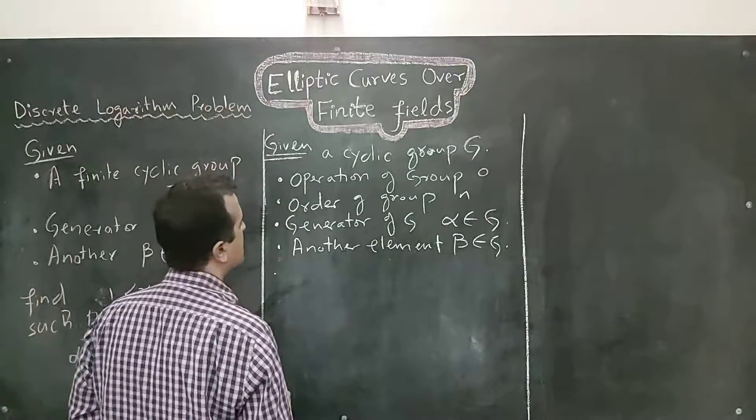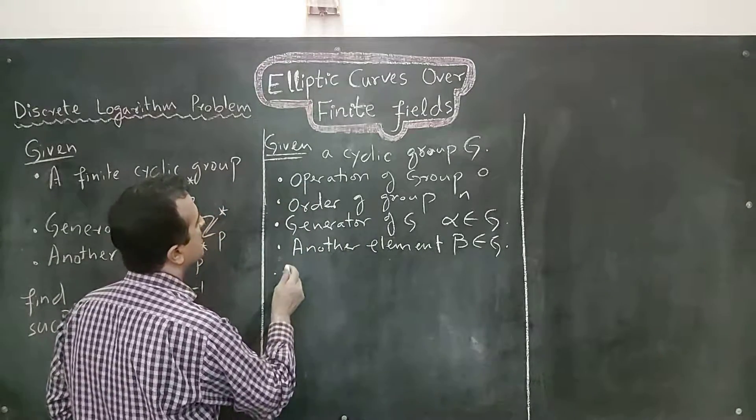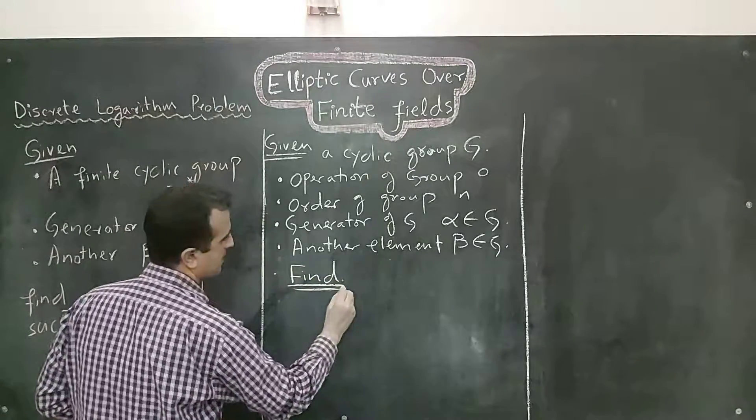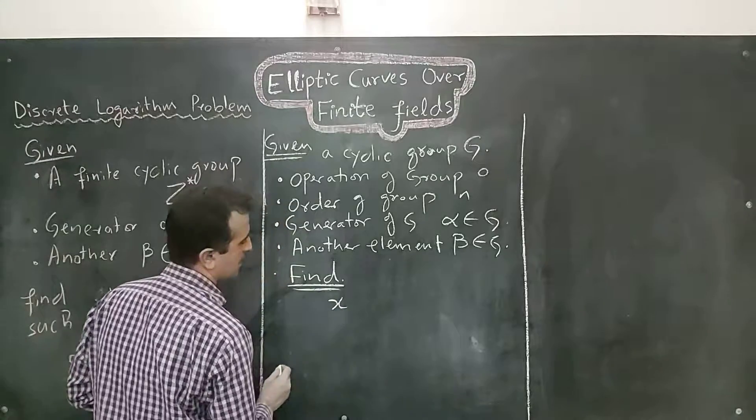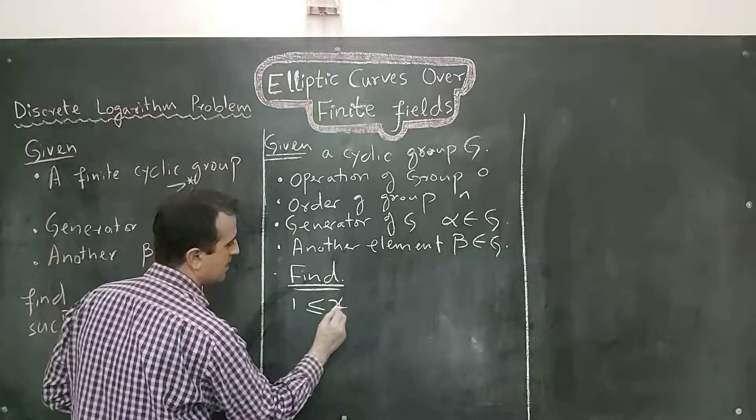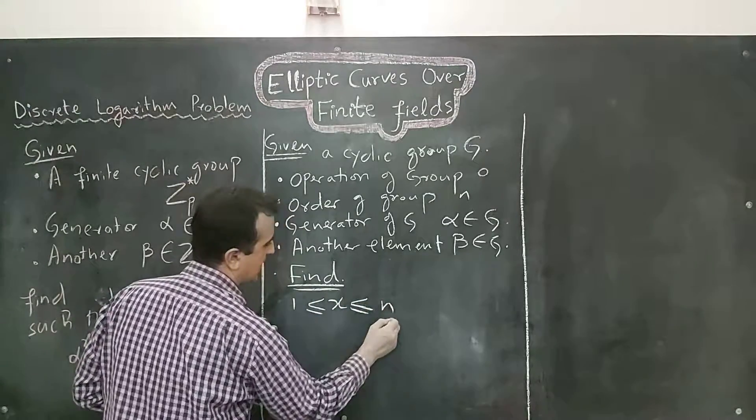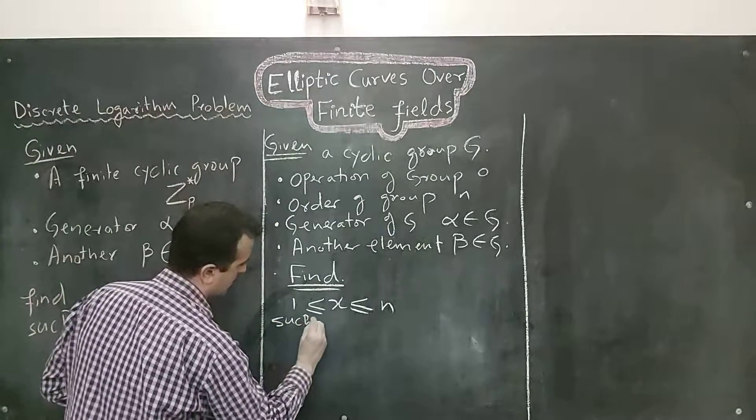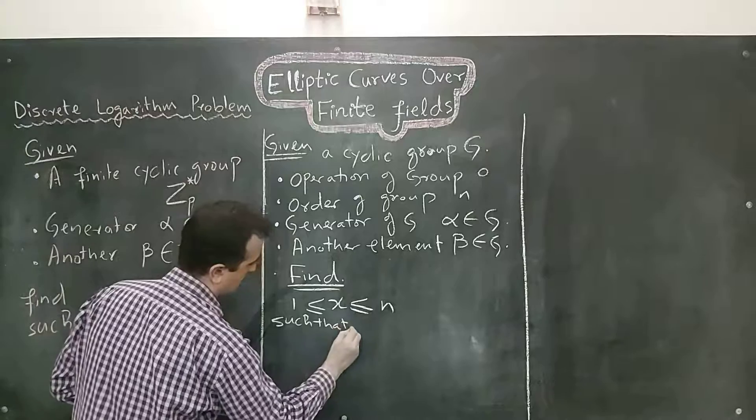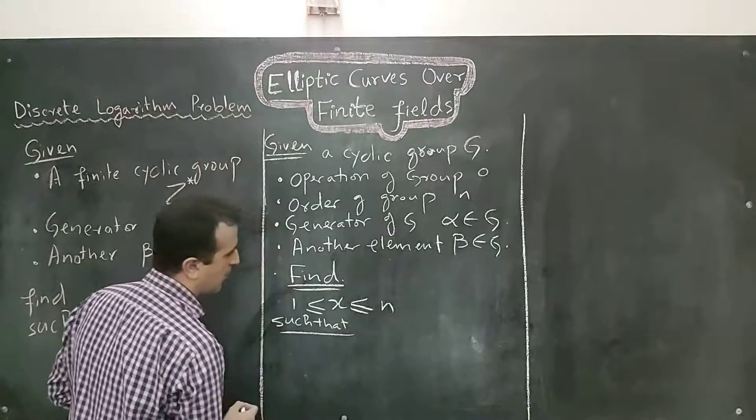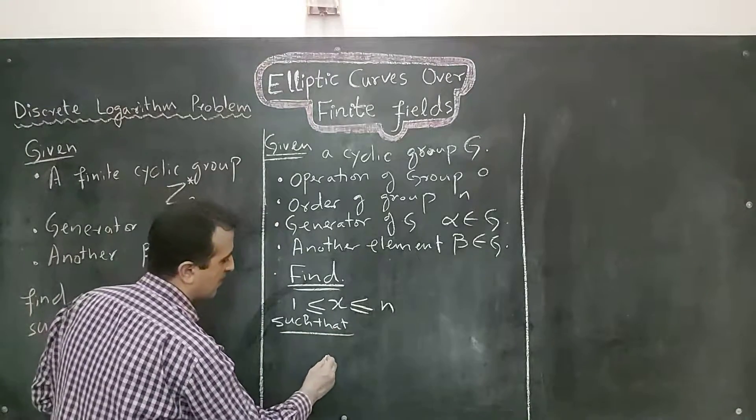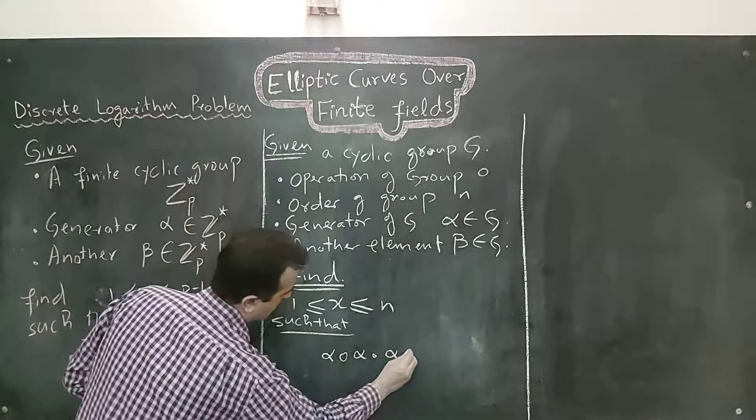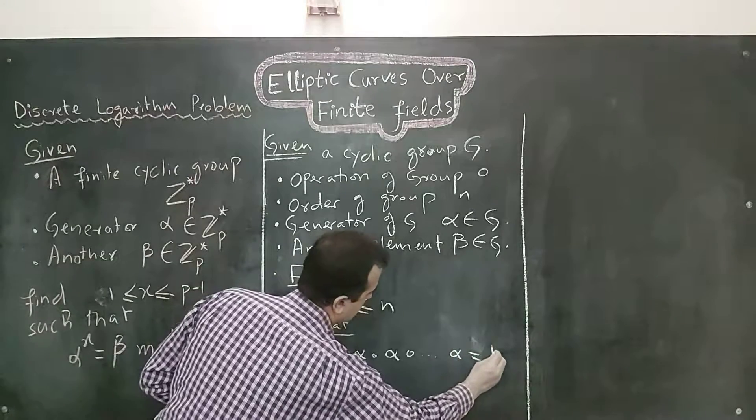And generalized discrete logarithm problem says that we have to find x between 1 and n where n is the order of the group such that, if the operation is applied x times on alpha, we get beta.